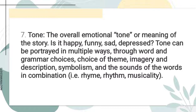The last literary element is tone. Tone is the overall emotional meaning of the story — is it happy, funny, depressed, and so on. Tone can be portrayed in multiple ways through word and grammar choices, choice of theme, imagery and description, symbolism, and the sounds of words in combination — such as rhyme, rhythm, and musicality. The significance of tone is that it helps us better relate to the audience's emotions, needs, wants, and interests. Tone can build a connection between reader and writer by eliciting an emotional response from the reader. Those are the seven literary elements of a story.